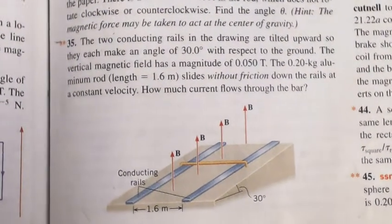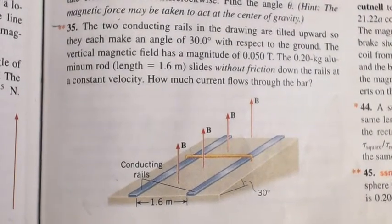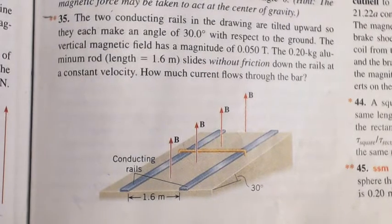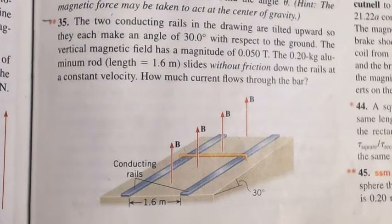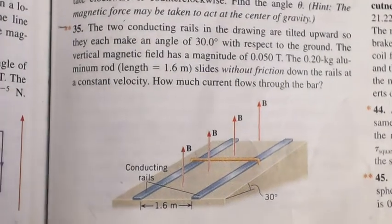Okay, let's take a look at question 35 in our textbook. We have two conducting rails with a wire across the middle. B field going up, how much current is flowing through the bar?